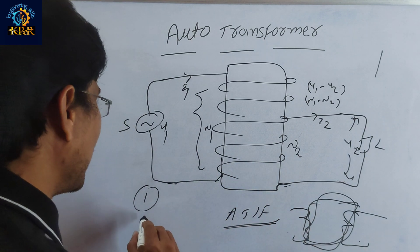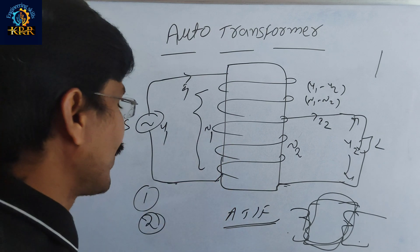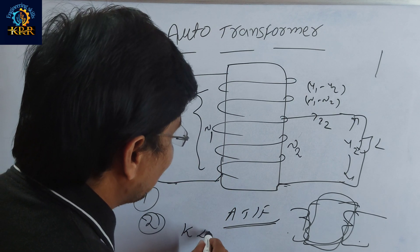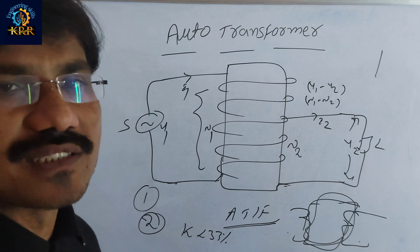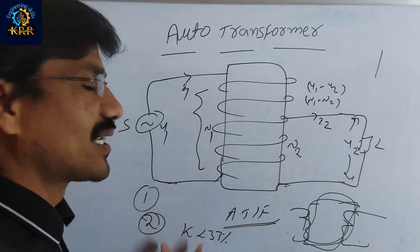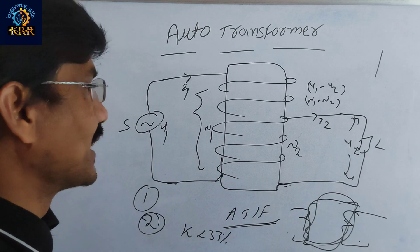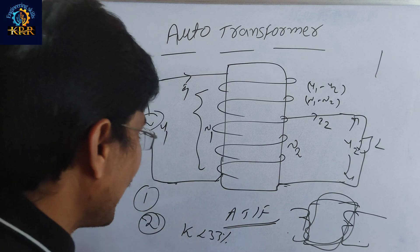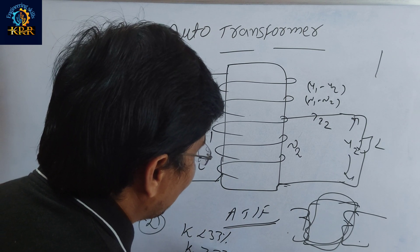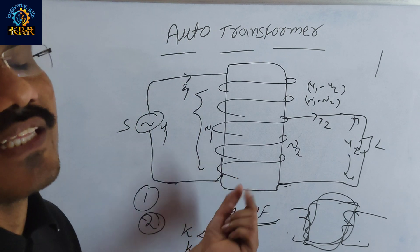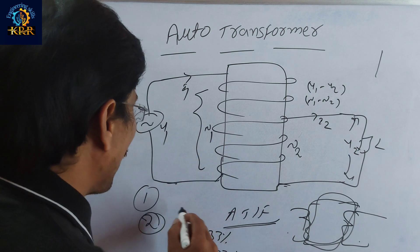The second drawback is that the auto transformer is not suitable when the transformation ratio is less than or equal to 33 percent. It is suitable only when the k value is greater than or equal to 33 percent.